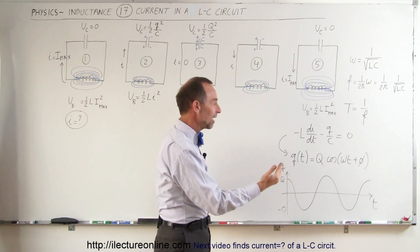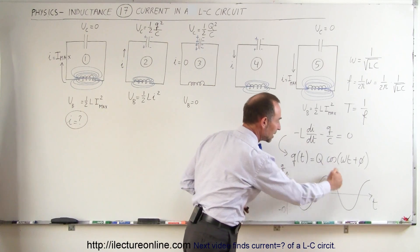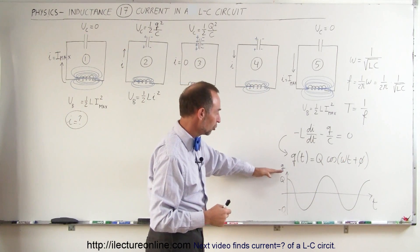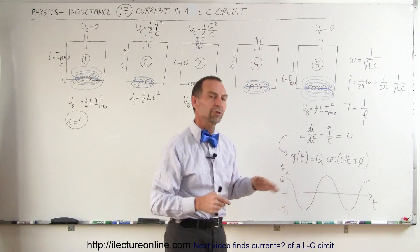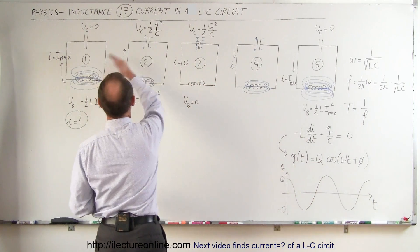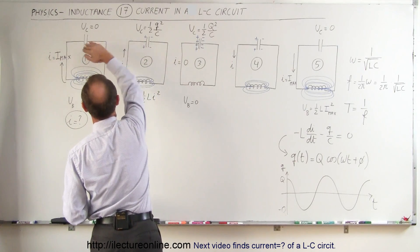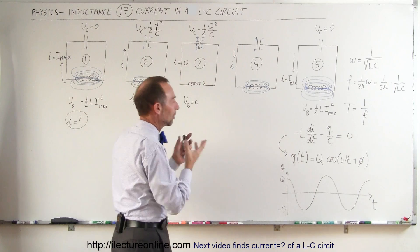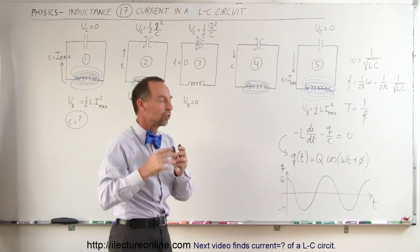If we then assume the phase angle to be zero, then we can draw the oscillatory indication of the charge on the capacitor: full charge, zero charge, negative full charge, zero charge, positive full charge and so forth as charge goes back and forth between one side and the other side of the capacitor going through the inductor. And so we have what we call an oscillatory circuit.